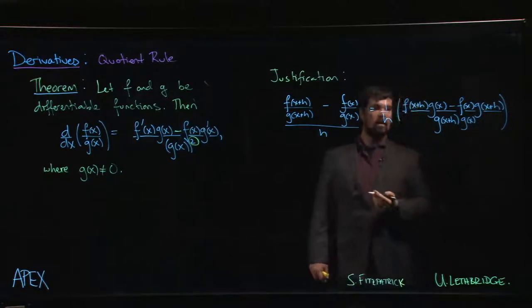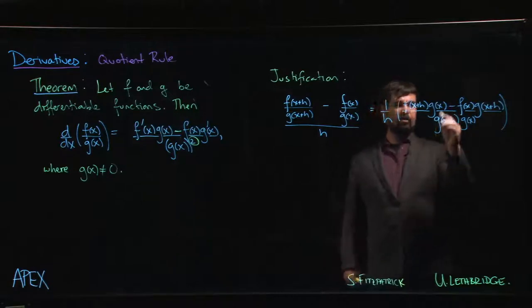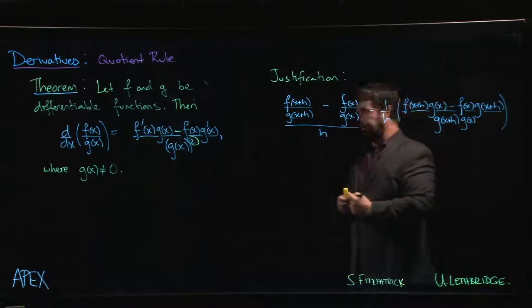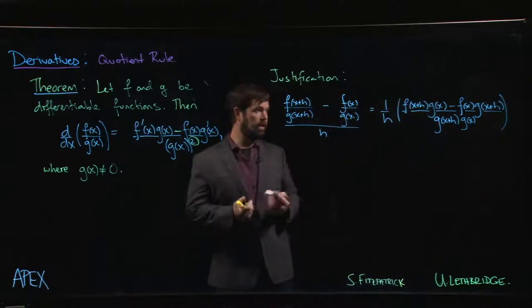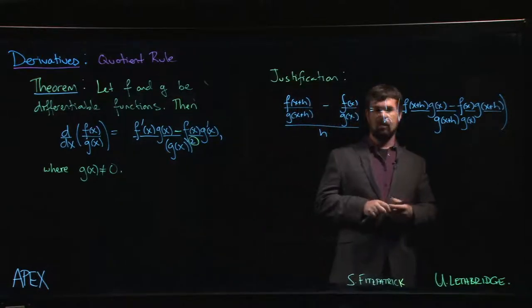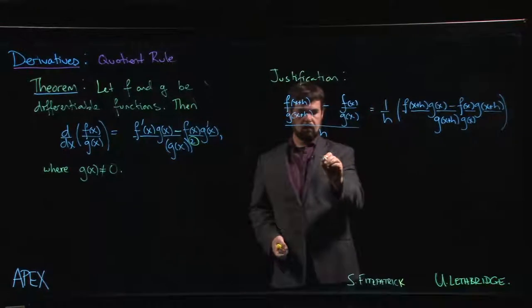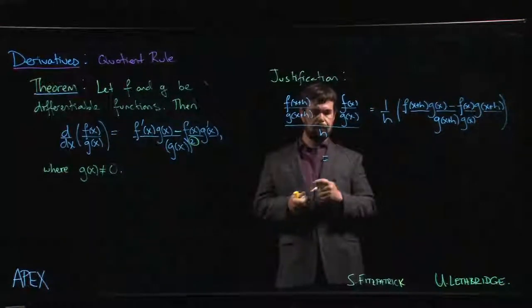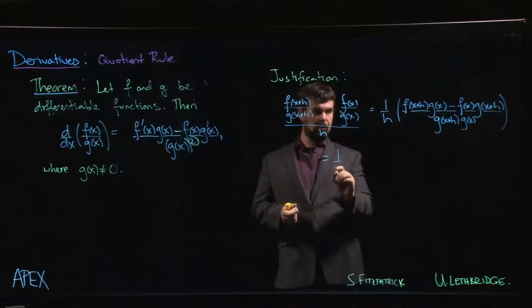All right, now we're going to do a trick similar to what we did in the product rule. In the product rule we need to add and subtract something to make things work out. In this case, the thing that we add and subtract is going to be just f of x times g of x.